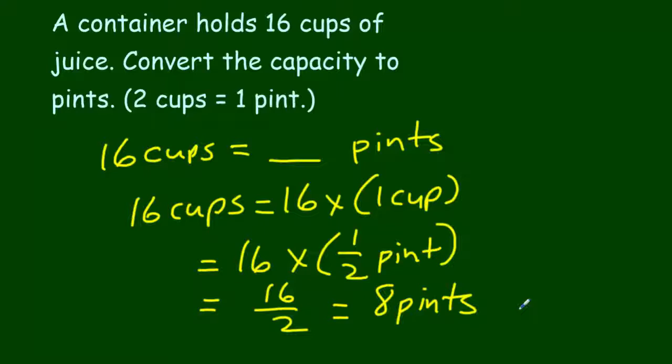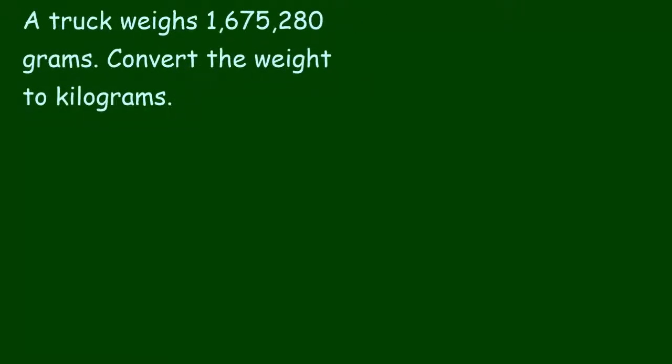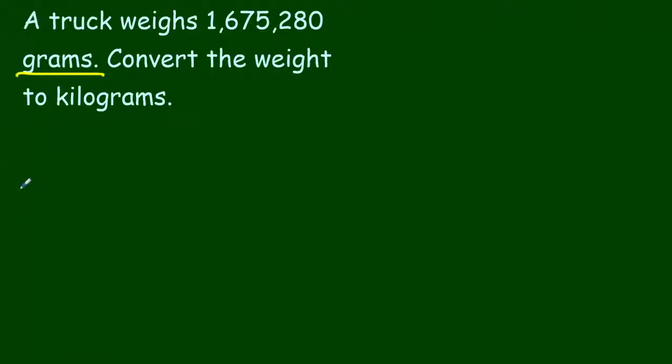This looks like it's probably the last page here. Last problem. It says a truck weighs 1,675,280 grams. When they say that a paper clip is about the weight of a gram, could you imagine? 1,675,280 paper clips would be the weight of a truck. Now it says convert the weight to kilograms. We are going from smaller to larger. I can see that right away because grams is our base unit. We have 1,000 grams in 1 kilogram. Let's write our problem down like we have been doing.